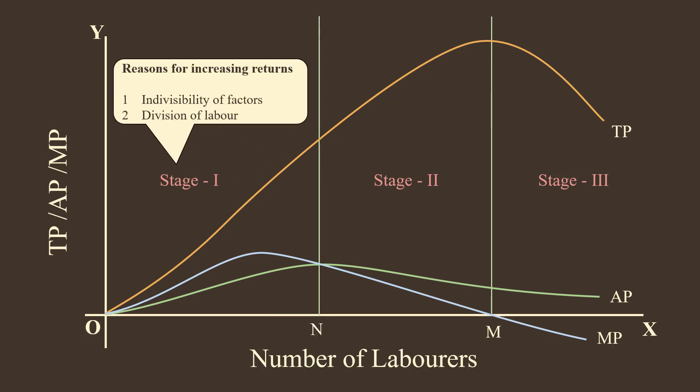Reasons for Increasing Returns: 1. Indivisibility of Factors. In the early stages of production, the size of the Fixed Factor is so large, variable factors are comparatively less. Variable factors are unable to use the full productive capacity of the Fixed Factor.